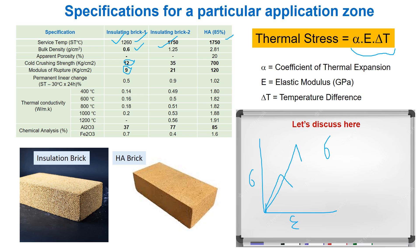If thermal stress equals alpha times E times delta T, and if the product of alpha and E becomes low, then the system can accommodate more delta T — that is, a greater temperature difference — meaning it can resist more thermal shock.